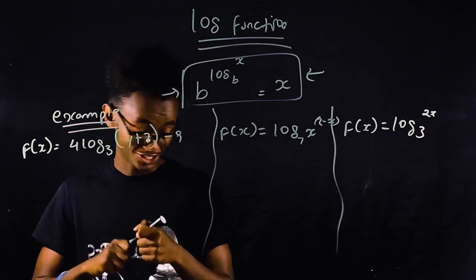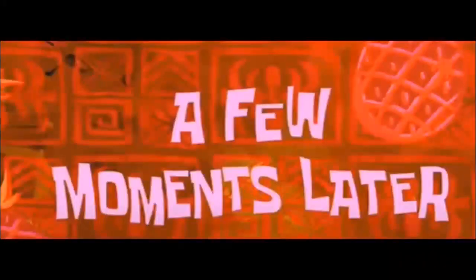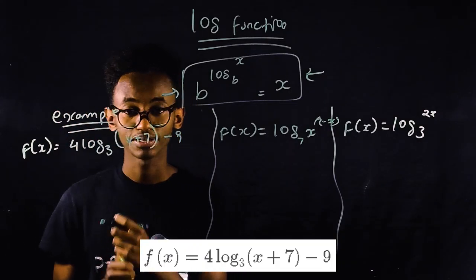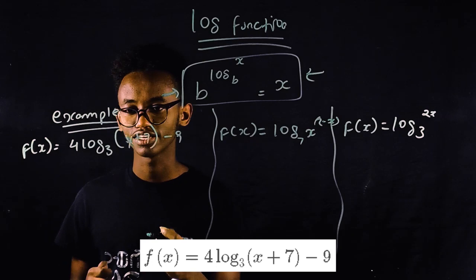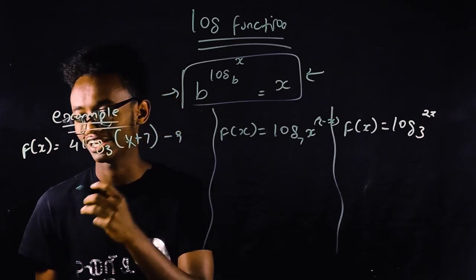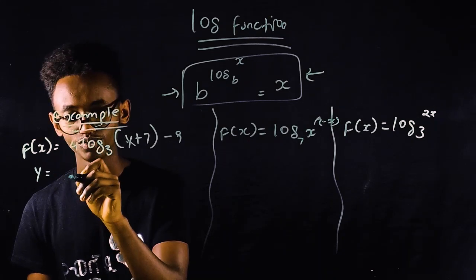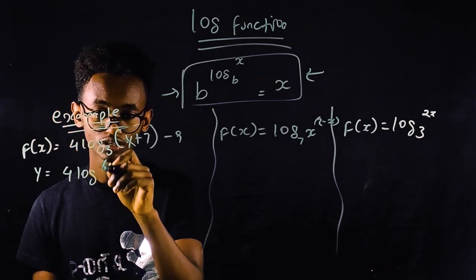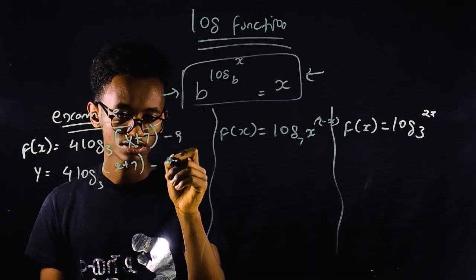A few moments later. We have f of x equals log(x + 7) in the base 3 minus 9. We're going to find its inverse.